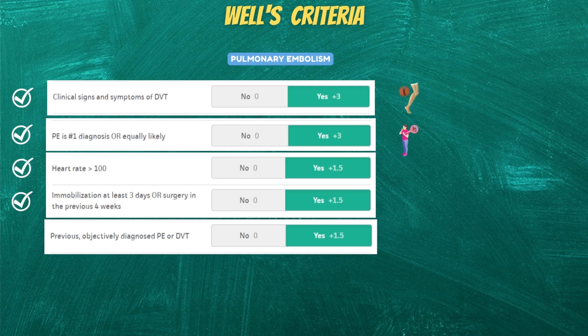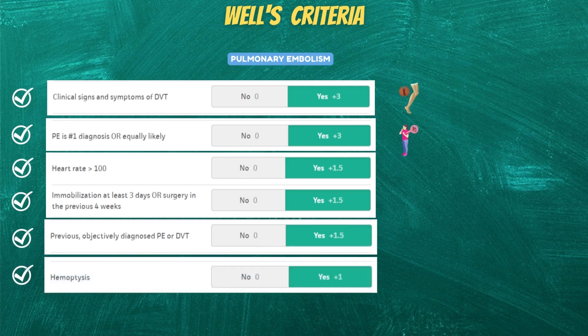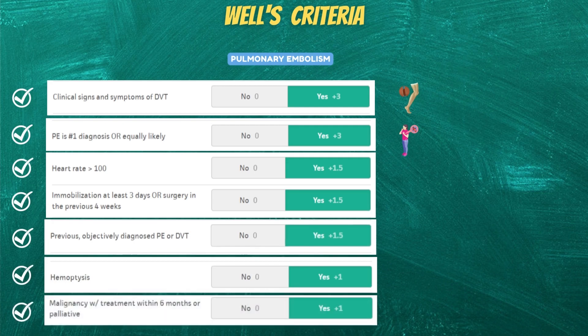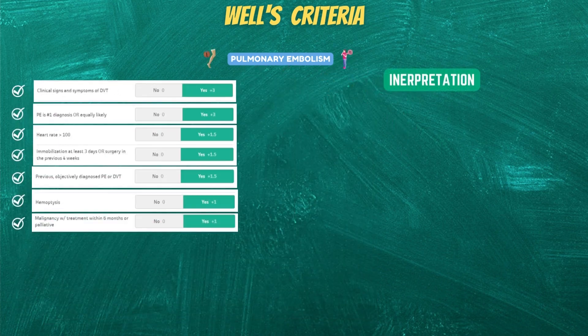Next, look for a history of the patient. Previous objectively diagnosed PE or DVT scores 1+. History of hemoptysis scores 1+, and the last variable is whether the patient has malignancy with or without treatment within 6 months, or is receiving palliative care, which also scores 1+.